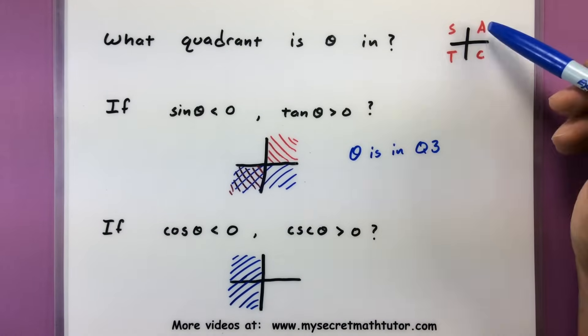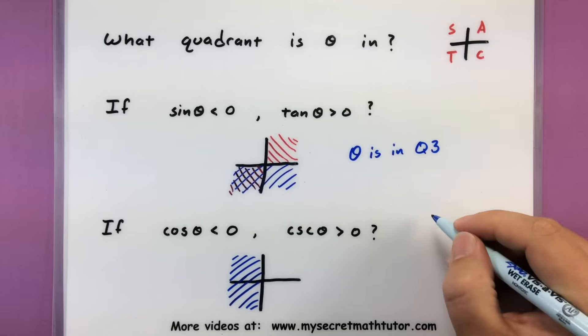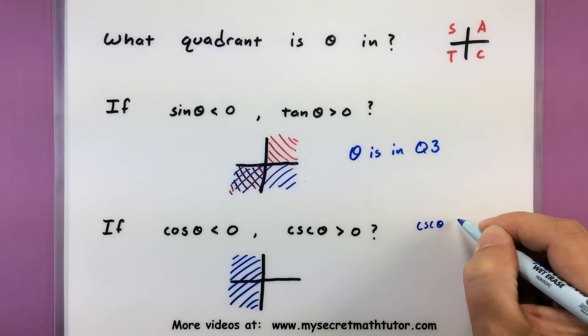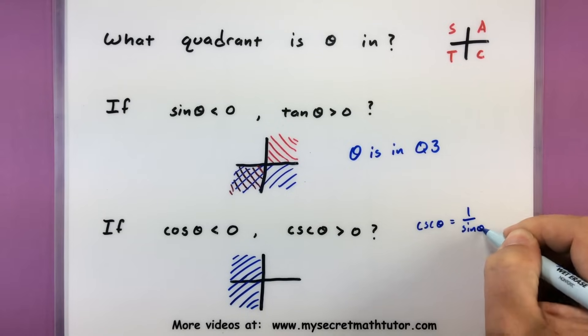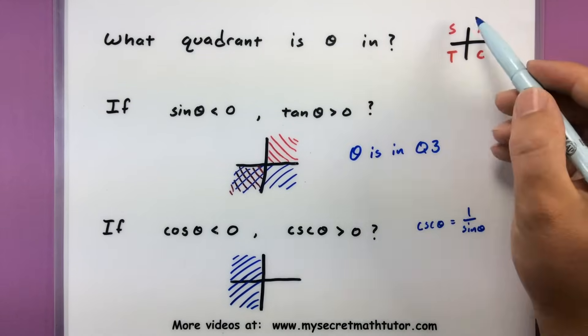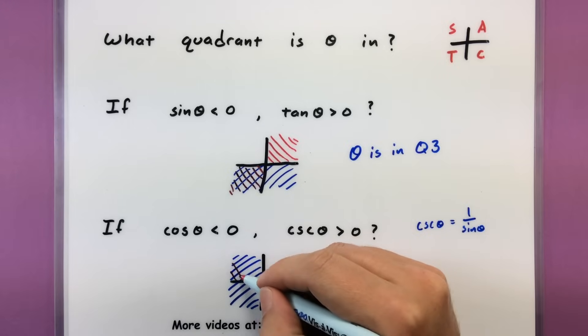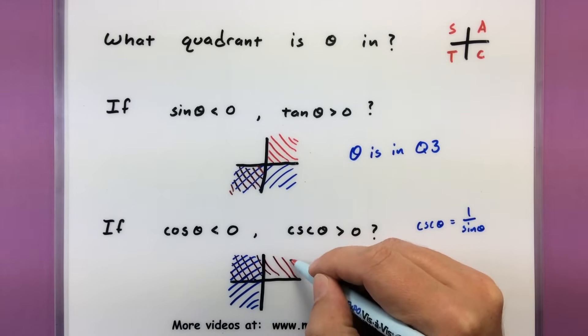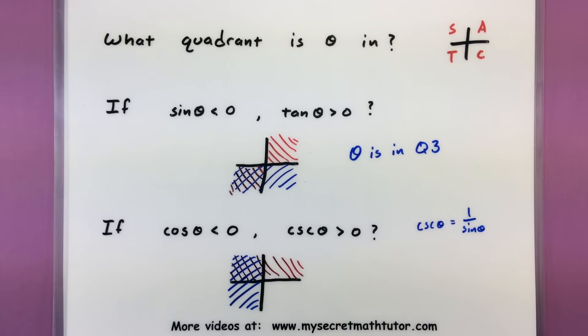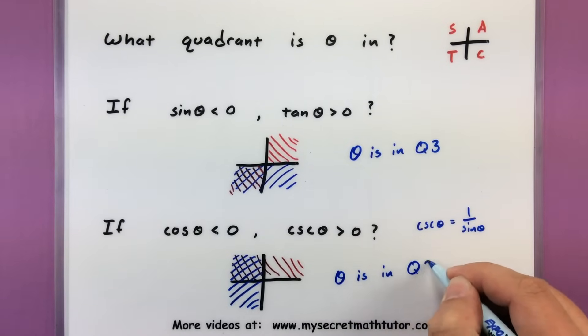You have to remember that these apply to their reciprocal identities. So cosecant is the reciprocal of sine. Cosecant of the angle equals one over sine of the angle, so it has to have the same sign as sine of the angle. Where is sine positive? Sine is positive up on the upper half here. Let's shade in the upper half. Now, just like before, there's only one place where both of these conditions happen simultaneously. Theta is in quadrant number two.